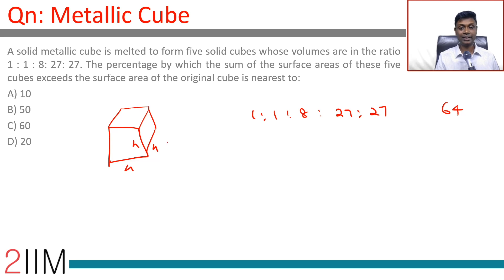Then we have 1, 1, 8, 27, 27. The percentage by which the sum of the surface areas of these five cubes exceeds the surface area of the original cube is nearest to... The original cube has area 6 into 4 square.